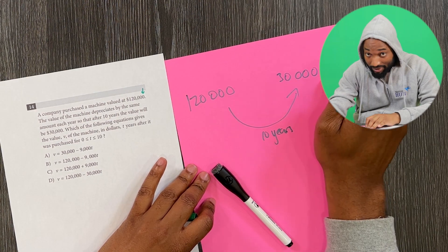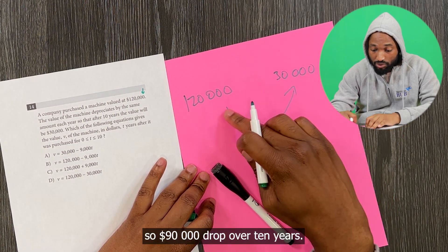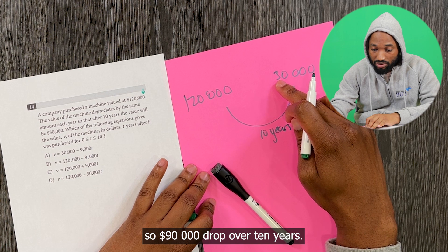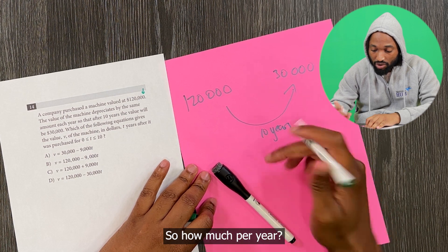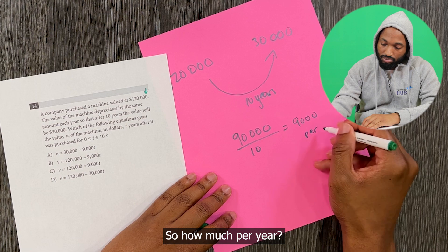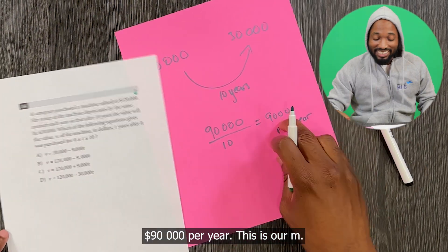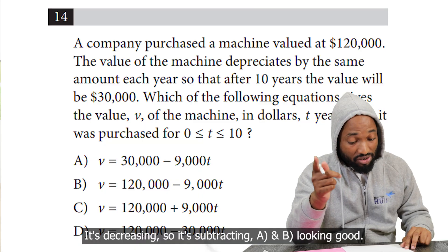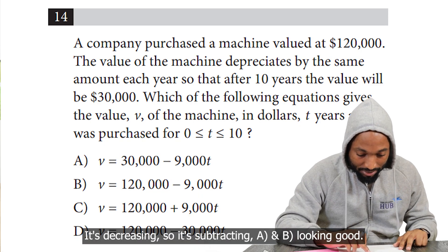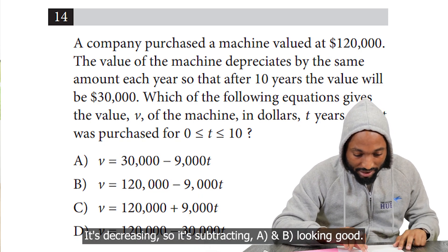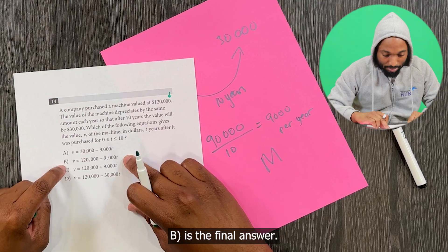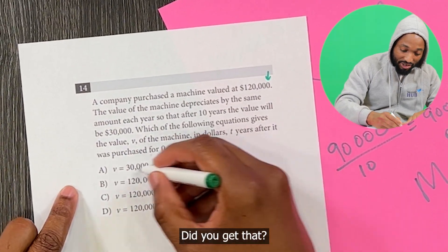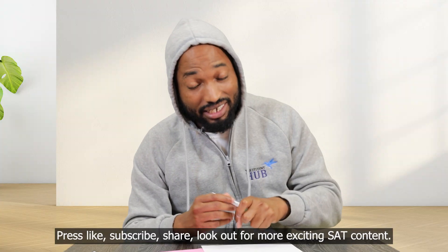So $90,000 drop over 10 years. So how much per year? $9,000 per year. This is our m, this is our gradient. It's decreasing, so it's subtracting. A and B looking good. Which one? It started at... B is the final answer. Did you get that? Press like, subscribe.